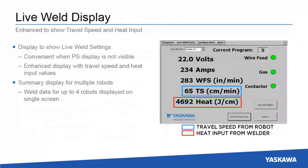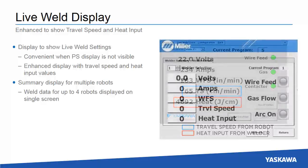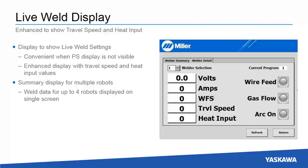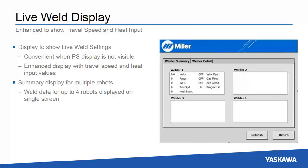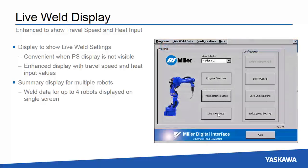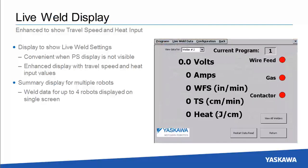Miller has included meters on their power source, which is appreciated by old school welders. However, the teach pendant can also display live weld data. It includes the addition of travel speed and heat input to aid in documenting a procedure. For a cell with multiple robots, a convenient summary display allows data from all welders to be viewed at a single location.